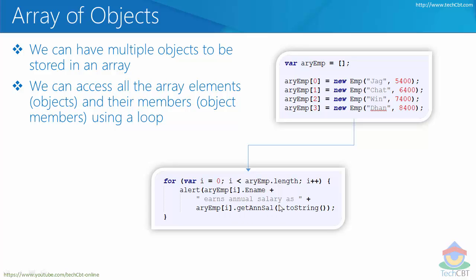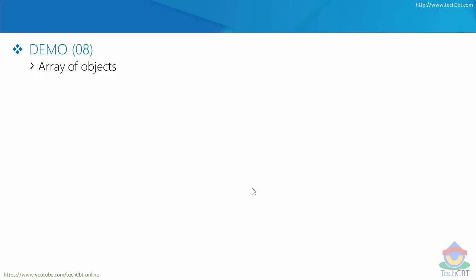We retrieve the value of the employeeName member, concatenate it with a message, and further concatenate it with whatever value is returned by executing a method available in the object at the same location. That EMP object not only has employeeName and salary properties, but also a method called getAnnualSalary, which multiplies the salary by 12. The result is concatenated with the whole message and displayed to the user. We can access both fields and methods of objects stored in an array using the object dot member notation.